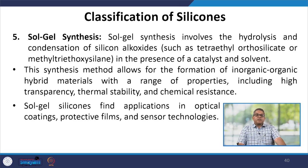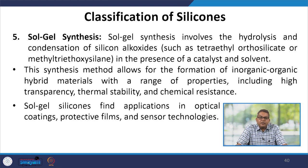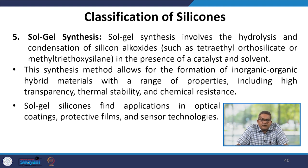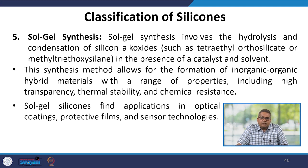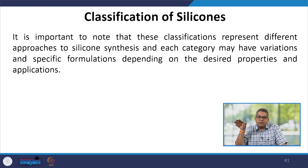Another classification is based on sol-gel synthesis. Sol-gel synthesis involves the hydrolysis and condensation of silicon alkoxides such as tetraethyl orthosilicate or methyl triethoxysilane in the presence of catalyst and solvent. This synthesis method allows the formation of inorganic-organic hybrid materials with properties including high transparency, thermal stability and chemical resistance. Sol-gel silicones find application in optical coatings, protective films and sensor technologies. These classifications represent different approaches to silicone synthesis, and each category may have variations depending on the desired properties and application.